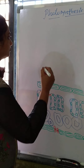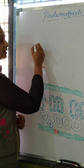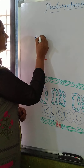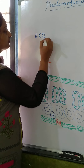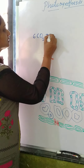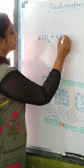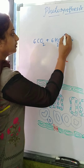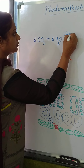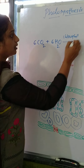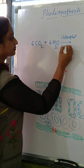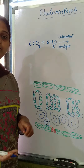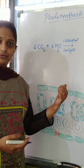Now let's see the reaction. In this, the carbon dioxide is taken up by the plants — that is 6CO2 plus 6H2O. Here it is in presence of chlorophyll and sunlight. It produces the carbohydrate.